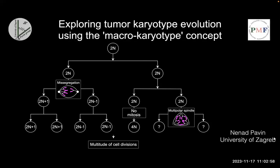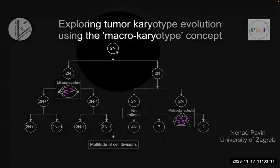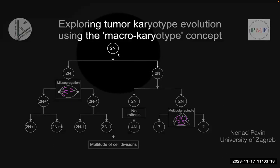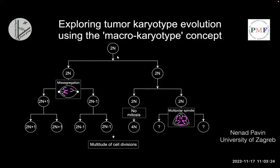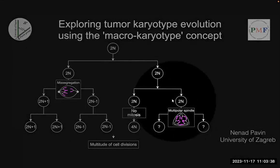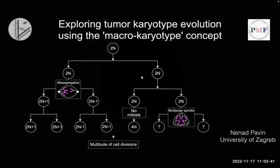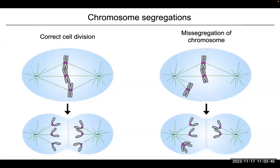Thanks for the invitation to present my work in this seminar series. I will talk about macrokaryotype evolution. My main goal is to show what happens when cells start from a certain set of chromosomes, termed karyotype. A karyotype means the set of chromosomes, and how this set changes in time due to different types of missegregations, such as single chromosome missegregations, multipolar divisions, or whole genome duplication.